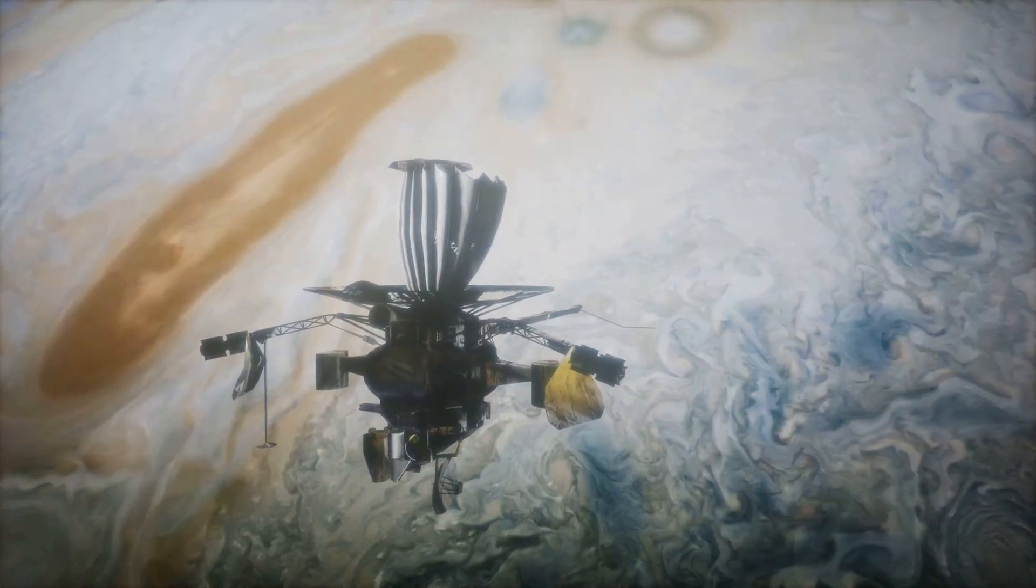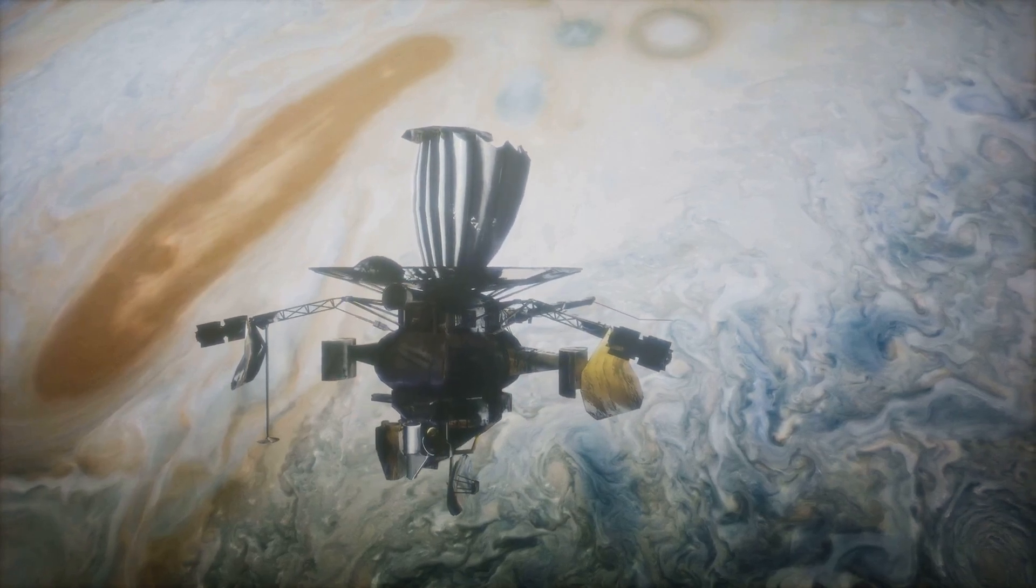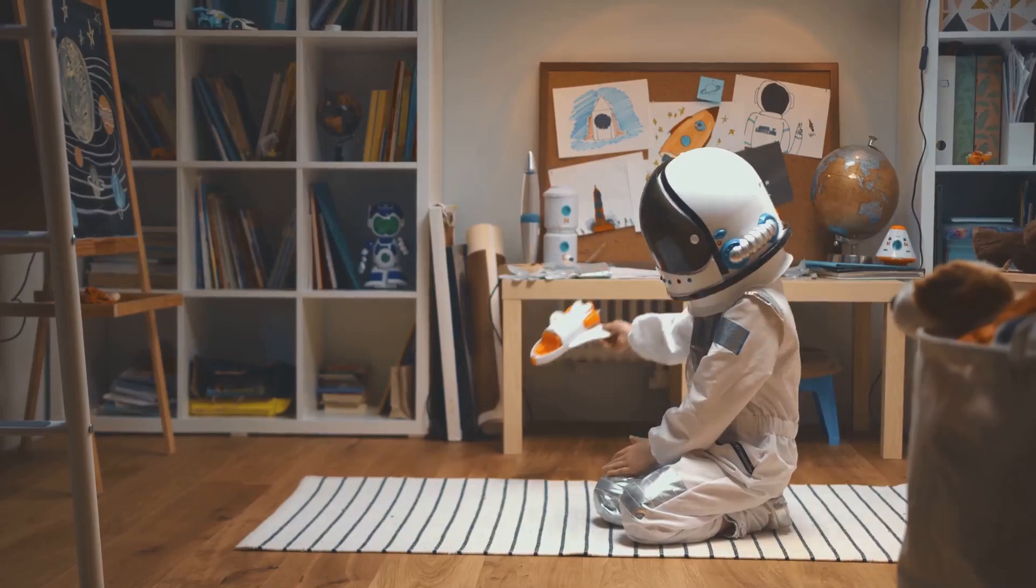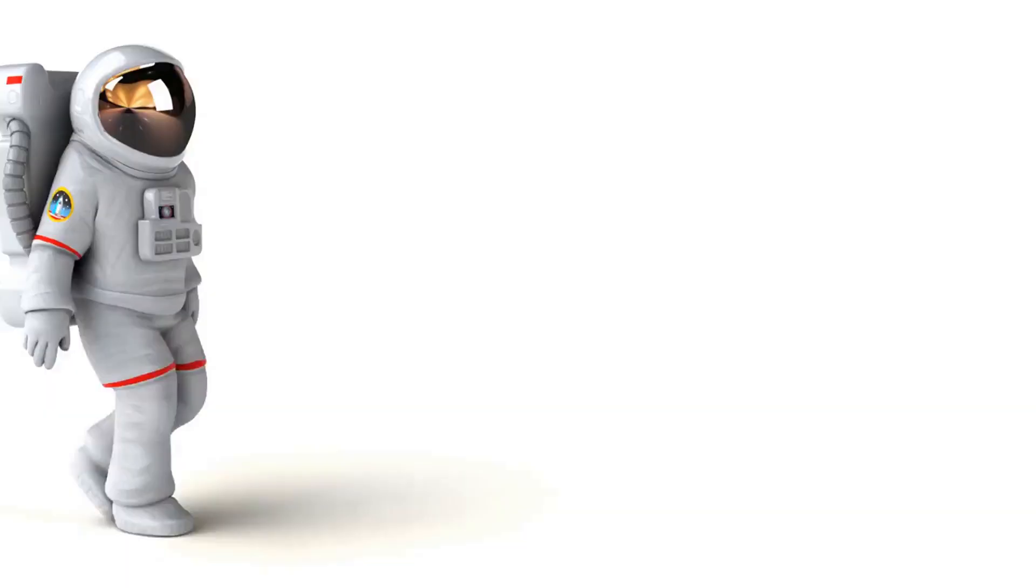So, at number three, we have Lego figures orbiting Jupiter. That's right, out in the infinity of the cosmos, three minuscule Lego figurines are on a journey unlike any other.